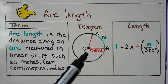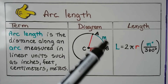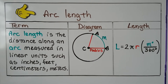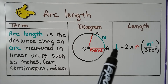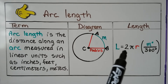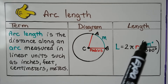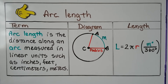We have a diagram here where we can see the radius. M is going to be the degree measure of the arc, and our formula would be L for the length of the arc is equal to 2πr times the quotient of M degrees and 360 degrees.